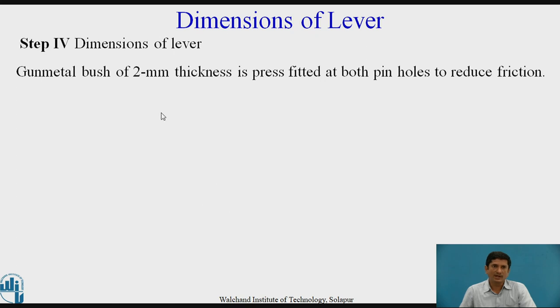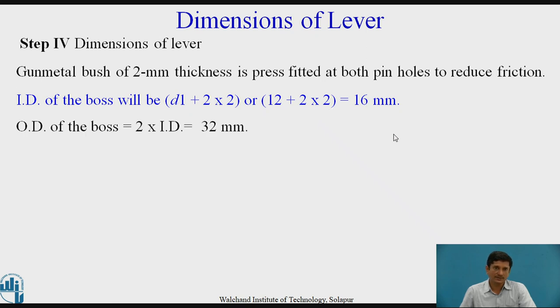Then, the dimensions of the lever. A gunmetal bush of 2 mm thickness is press fitted at the both pin zone in order to reduce the friction. ID of the boss, D1 plus 2 times the thickness. Therefore, it comes out to be 12 plus 4, 16 mm. OD of the boss, it is to be taken as 2 times the ID, which is equal to 32 mm.